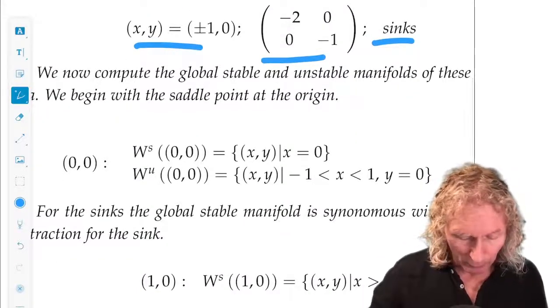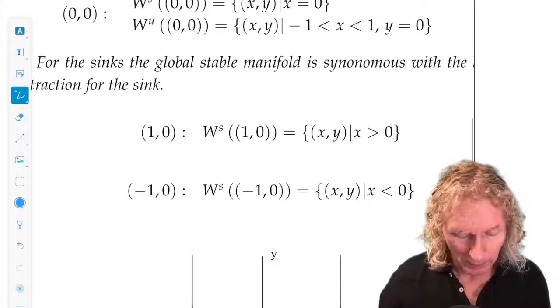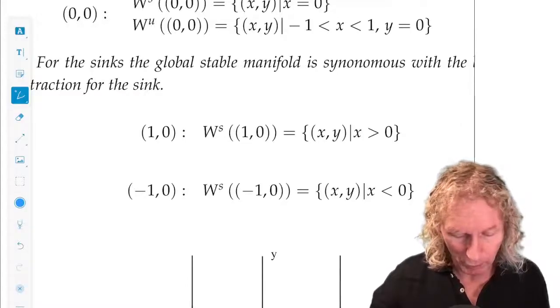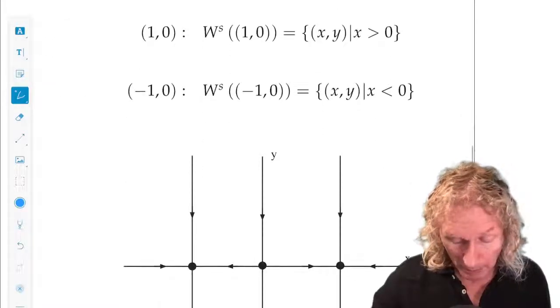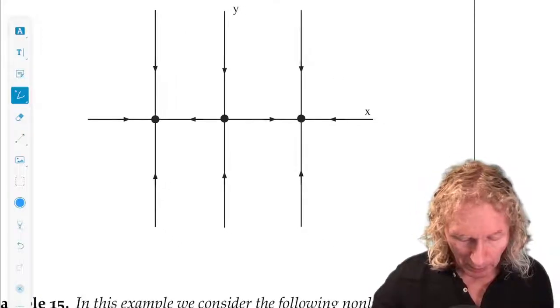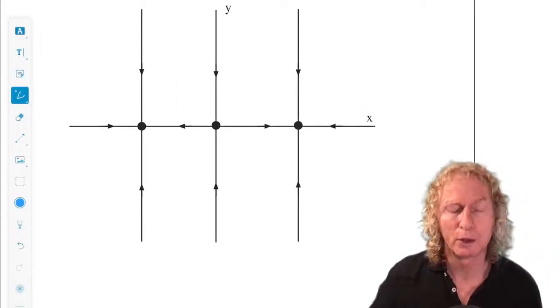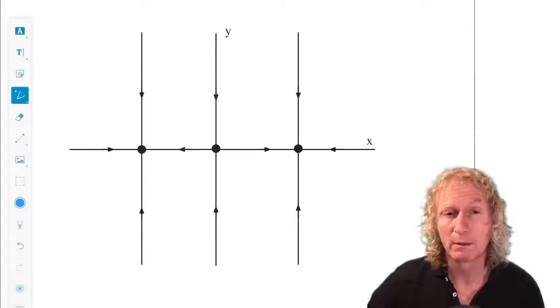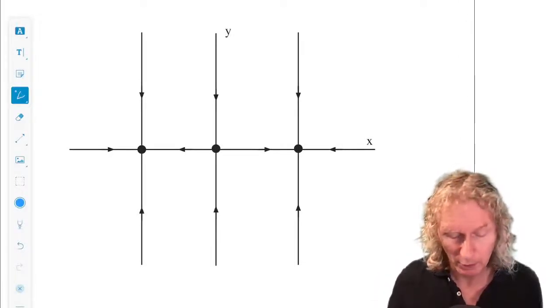So I write down formulas here for the stable and unstable manifolds, the global stable and unstable manifolds. But you can come back and check that. It's easiest just to look at the phase portrait and determine what's going on.